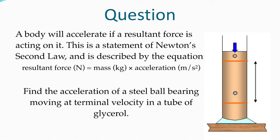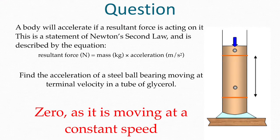And now I'd like to find the acceleration of a steel ball bearing moving at terminal velocity in a tube of glycerin. Here, the acceleration would be zero because the object is travelling at terminal velocity. Therefore, it's moving at a constant speed, so the speed isn't changing. There is no acceleration.